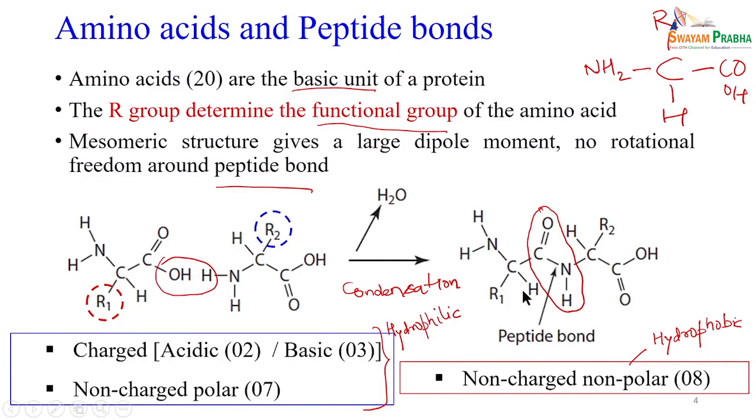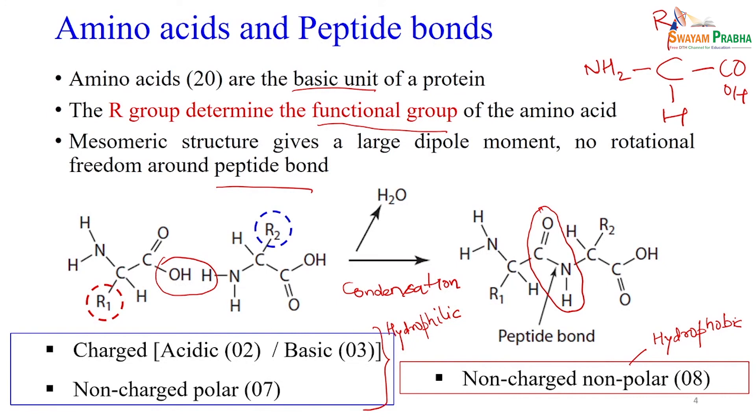Once different combinations of these amino acids are present in a protein, the protein occupies hydrophobic groups, hydrophilic groups, positive charge groups, and negative charge groups. This makes interactions within a protein — protein-protein or protein-surface interactions — complex because of the involvement of polar, non-polar, positively charged, and negatively charged amino acids.